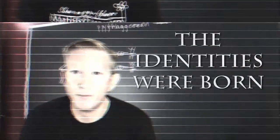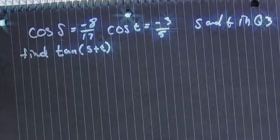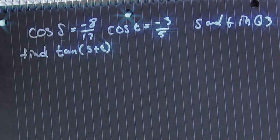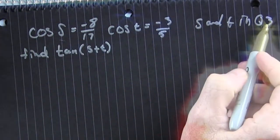And this is where the identities were born. We're trying to find the tangent of s plus t. They give us some information, all right?